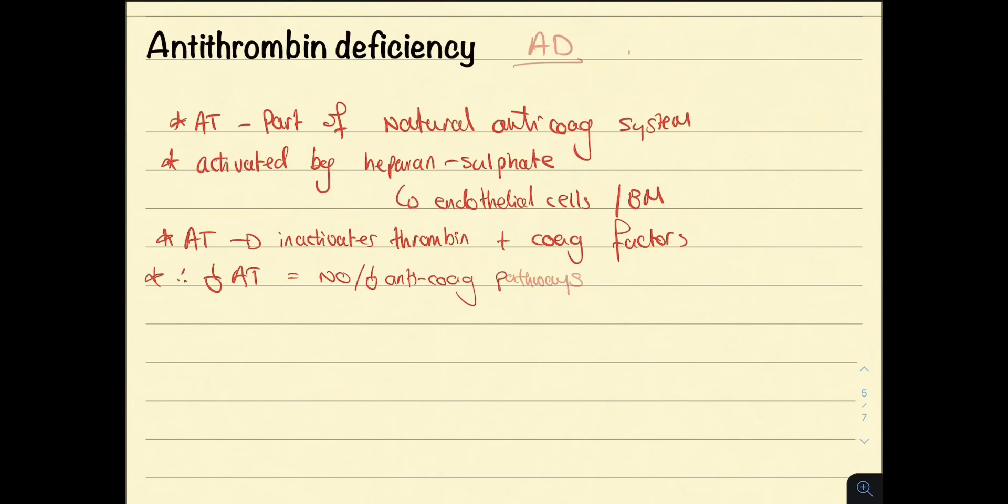Antithrombin deficiency can be inherited as an autosomal dominant disorder or acquired through, for example, trauma.